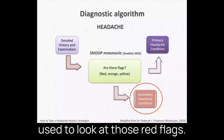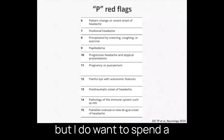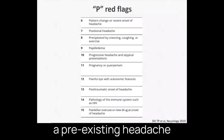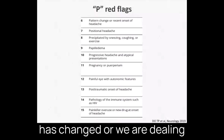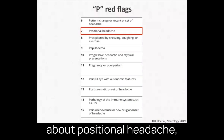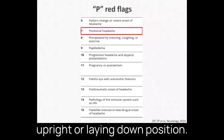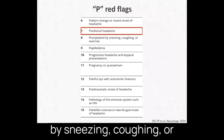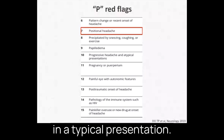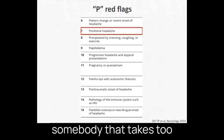The SNOOP mnemonic is something commonly used to look at those red flags. We're not going to go into details today, but I want to spend a minute on some P red flags. Somebody can have a pre-existing headache condition, but now something has changed, or we are dealing with a new headache altogether. Positional headache — meaning worse or only present upright or when lying down — is a red flag, as is headache precipitated by sneezing, coughing, or exercise, a progressive headache, atypical presentation, or post-traumatic headache. Someone taking too many pain medications is also a red flag.